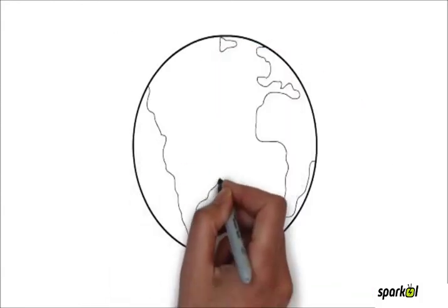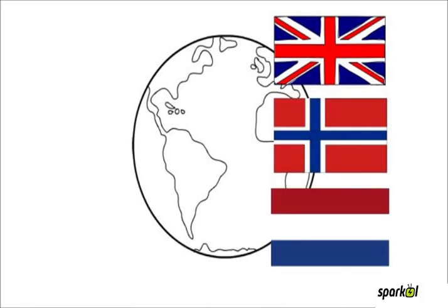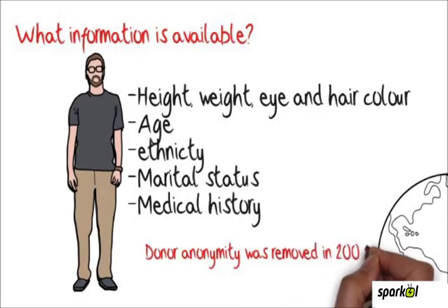Legislation on gamete donation has changed in recent years with some countries, including the UK, Norway and the Netherlands, removing donor anonymity so that donor conceived children when they reach 18 can find out the identity of the donor.